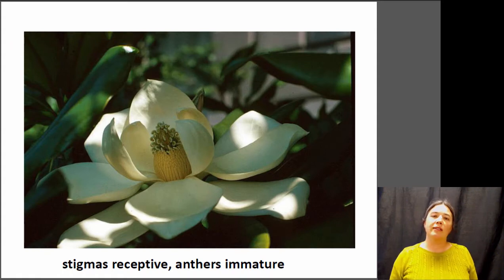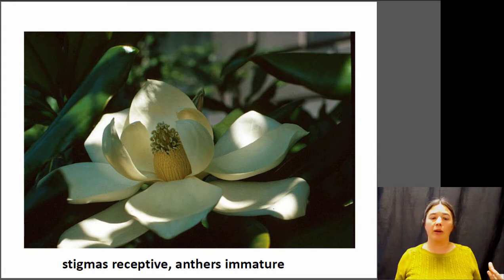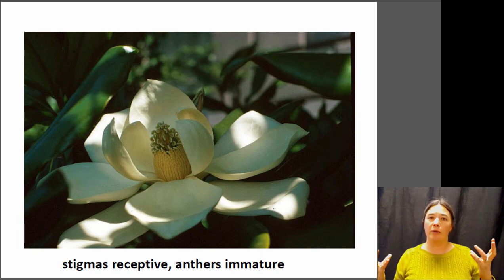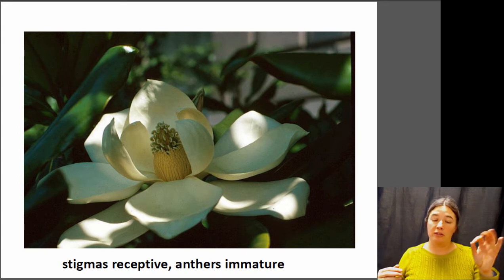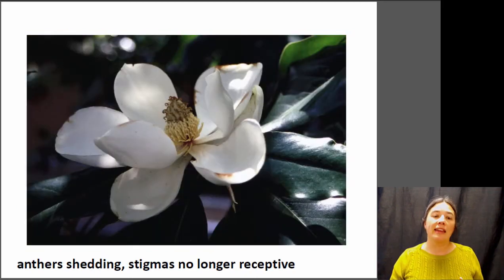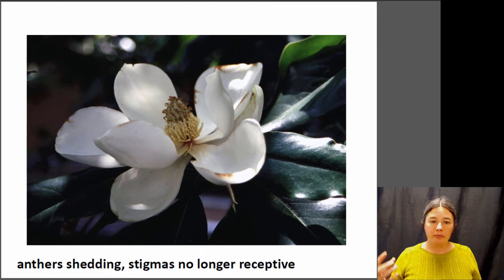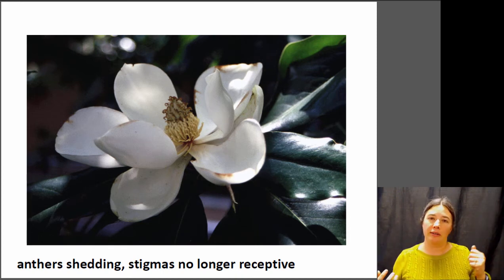Another approach is to have the anther and the stigma mature at different times — temporally separating them. This is a magnolia blossom. The first thing that happens is that the stigmas become receptive to pollen — they mature first — while the anthers are immature and aren't producing pollen. So if a pollinator comes in, there's no pollen to pick up, preventing accidental transfer to the same flower. Later, after the stigmas have been pollinated, the anthers start producing pollen, and a pollinator can pick it up and carry it to another flower.